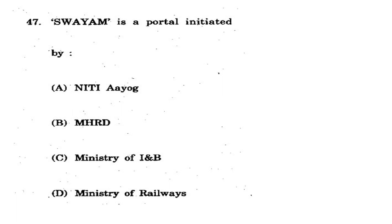Question 47: SWAYAM is a portal initiated by which organization? Options: NITI Aayog, MHRD, Ministry of I&B, Ministry of Railways. Ministry of Railways is eliminated; NITI Aayog does planning but this portal is for students. The correct option is B - MHRD (Ministry of Human Resource Development). SWAYAM portal was initiated by MHRD for human resource development and education.